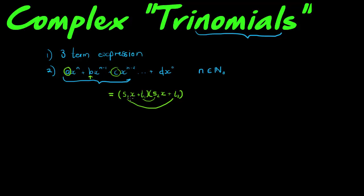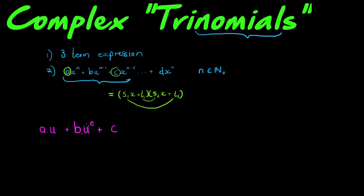The idea remains the same if I've got any base u with any exponent e and some coefficient, plus another term with the same base but double the exponent, plus a constant c. Then this is a kind of complex trinomial — not a normal trinomial, but it might also be able to factorize if it has the same a, b, and c structure as a standard trinomial.